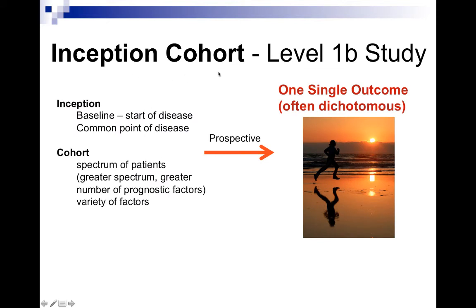An inception cohort, or Level 1b study, has two essential characteristics. It has a common inception point — essentially most of the time a baseline, which is the start of the disease, or a common point during the disease. It includes a cohort or spectrum of patients that are consecutively enrolled, and then the tests at baseline or the common point are applied, and they're followed until the outcome occurs or doesn't, or a sufficient amount of time has been allowed for the outcome to occur.